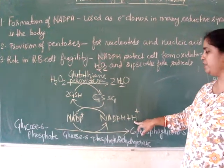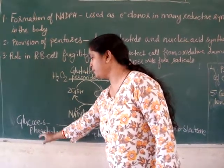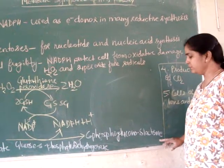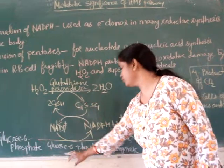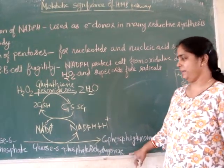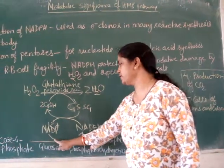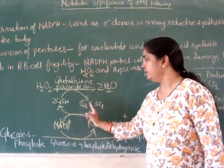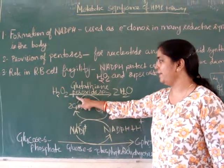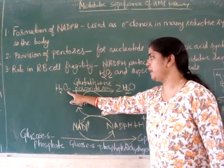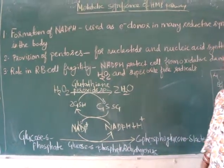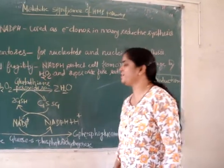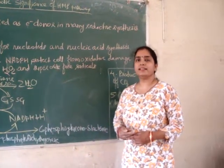This conversion is accomplished with the help of NADPH, which provides the electrons, and NADPH is oxidized to NADP+. This NADPH comes from the first reaction of the PP pathway — the conversion of glucose 6-phosphate to 6-phosphogluconolactone in the presence of glucose 6-phosphate dehydrogenase enzyme. If there is a deficiency of glucose 6-phosphate dehydrogenase enzyme, it causes hemolytic anemia.